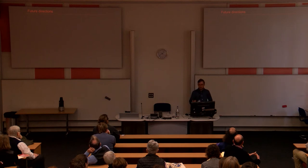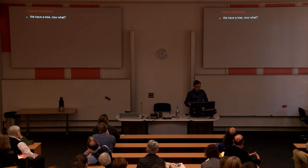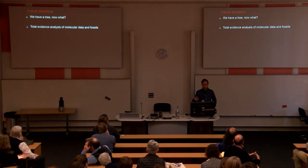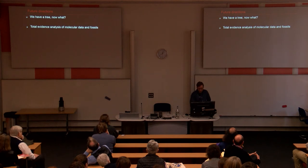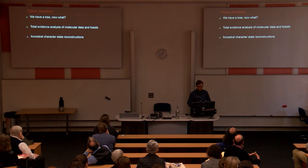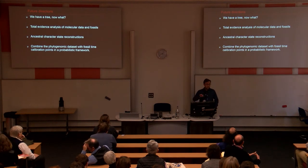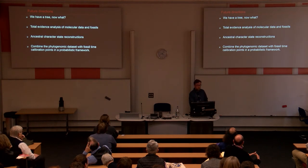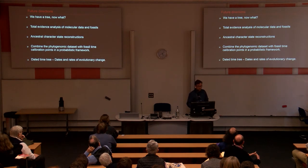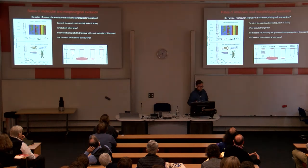Where do we take this now? This is still an early stage, but there are lots of exciting questions to address. We can start using total evidence, integrating our morphological data with the molecular tree, doing things like tip dating, looking at ancestral character state reconstructions such as with biomineralization — doing this in a more objective and statistically rigorous way. We can also use our excellent fossil record as calibration points for dating the evolution of brachiopods themselves, ultimately giving dated time trees that give us insight into dates and rates.